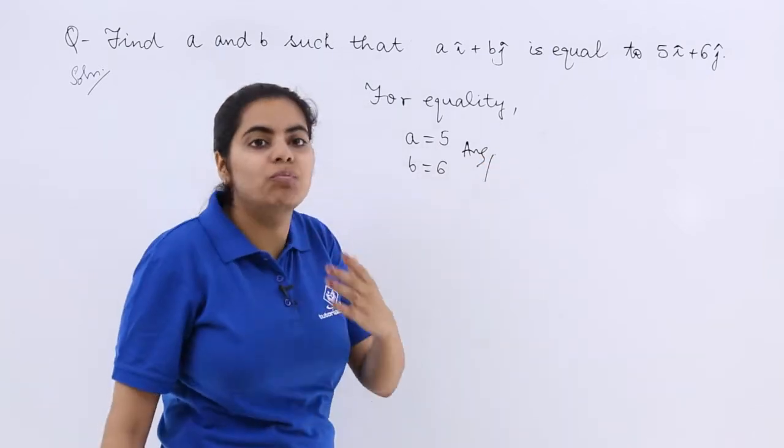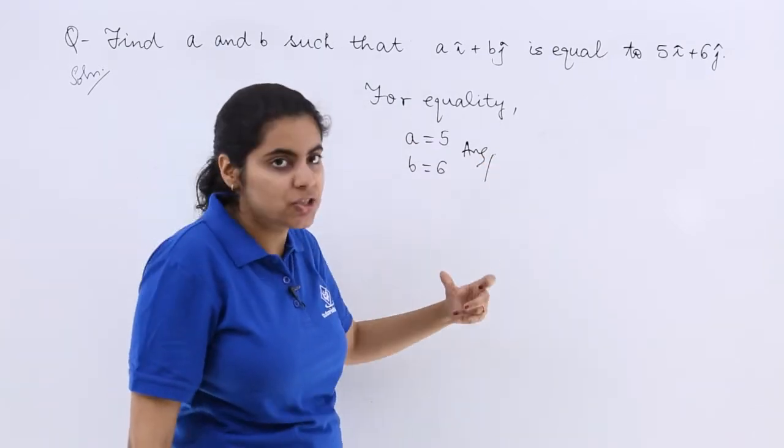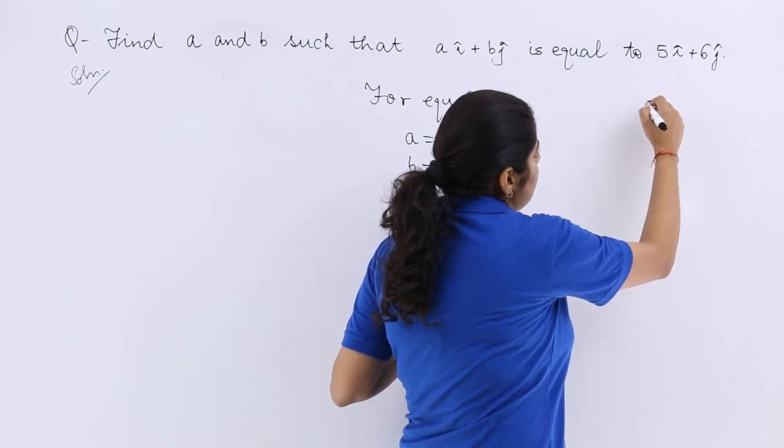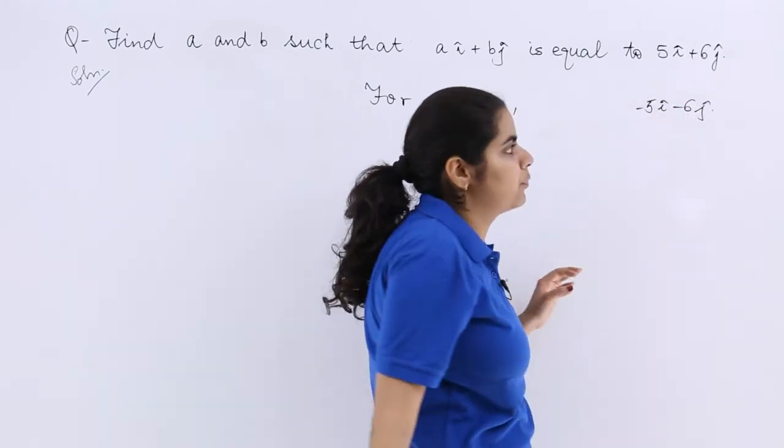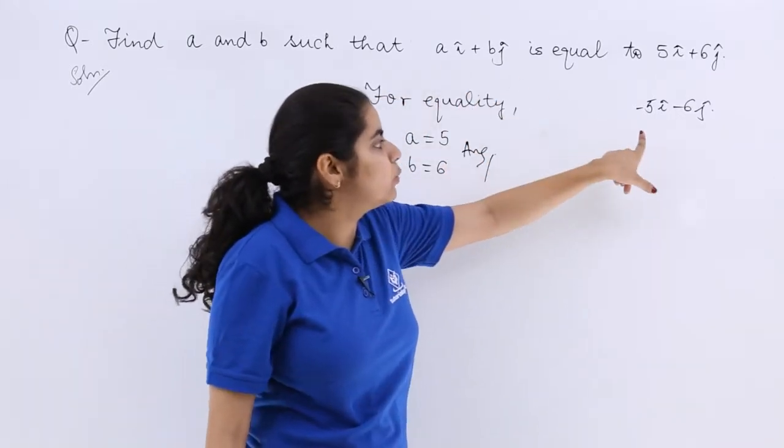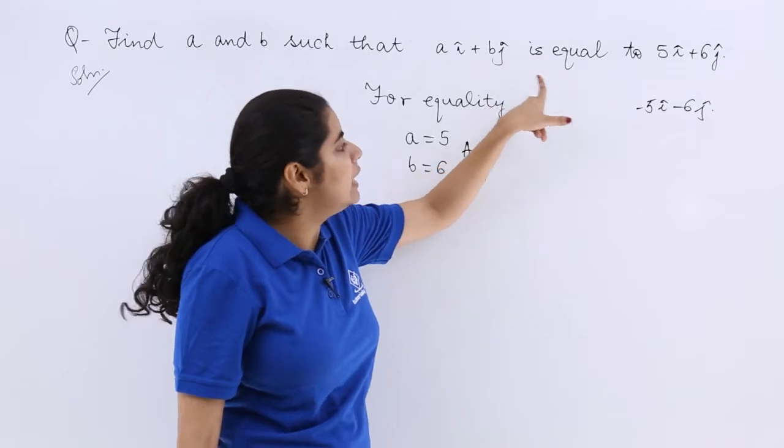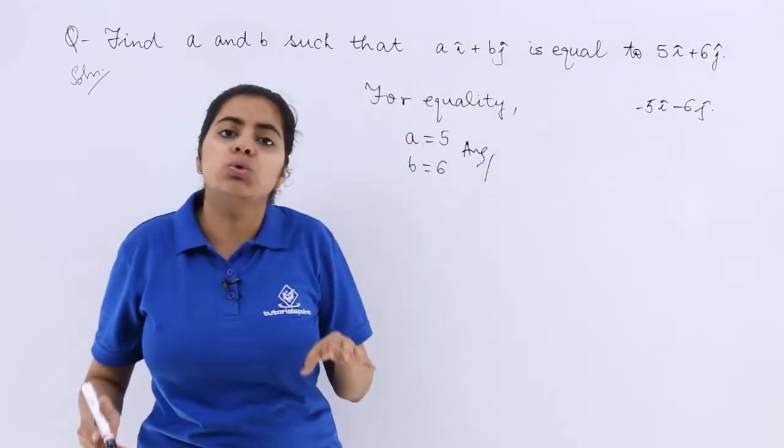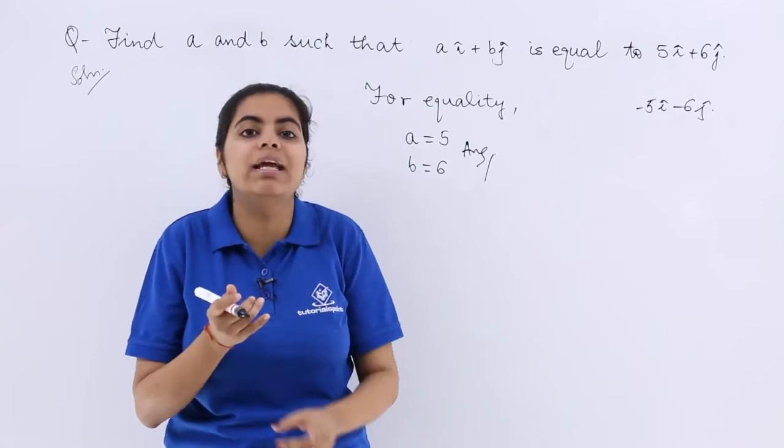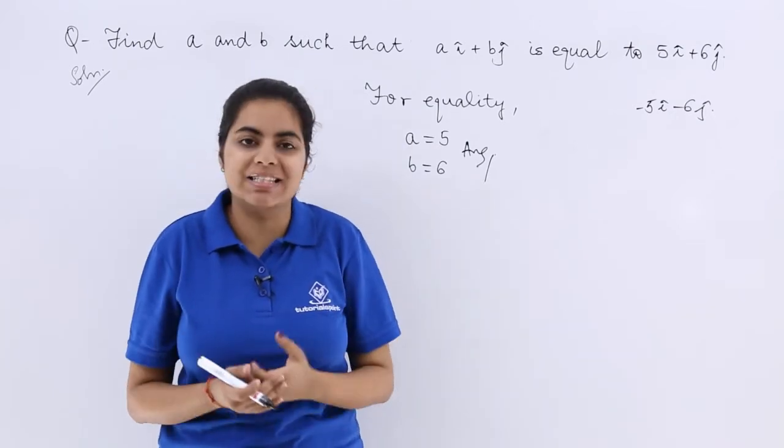Now let me teach you some more things from this. If the question was here in place of 5 i cap, it is minus 5 i cap and here it is minus 6 j cap, then what should be your answer? Your answer should be A is equal to minus 5 and B is equal to minus 6. So do not get confused because you have to take care that you have to take the sign also into consideration.